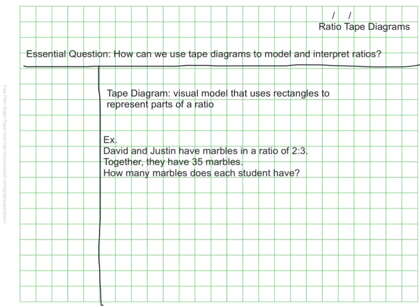I'm going to start with this example where we have two students and we know the ratio of marbles between them. David clearly has two marbles to every three marbles that Justin has. However in total we know that they have 35 marbles. They don't just have the five that we see. The question is how many marbles does each student have?